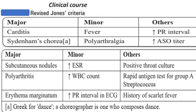The clinical course and Jones criteria for diagnosing rheumatic fever: Major criteria are carditis, Sydenham's chorea, subcutaneous nodules, polyarthritis, and erythema marginatum. Minor criteria are fever, polyarthritis, increased ESR, increased WBC count, and increased PR interval on ECG. Supporting evidence includes increased antistreptolysin O titer, positive throat culture, rapid antigen test for Group A beta-hemolytic streptococcus, and history of scarlet fever.